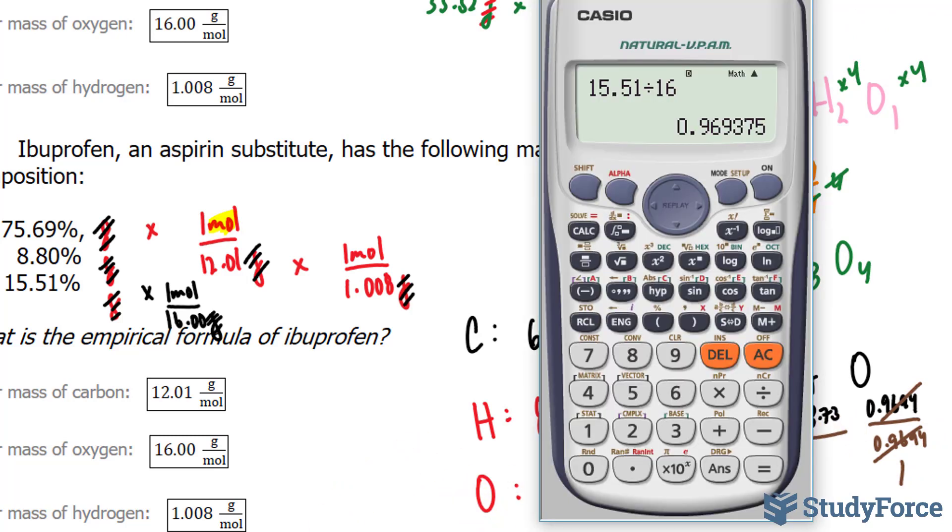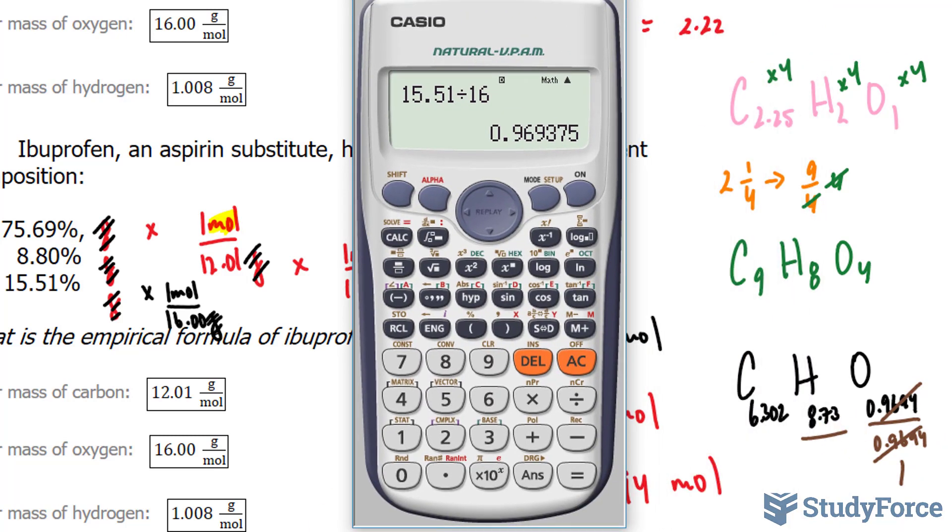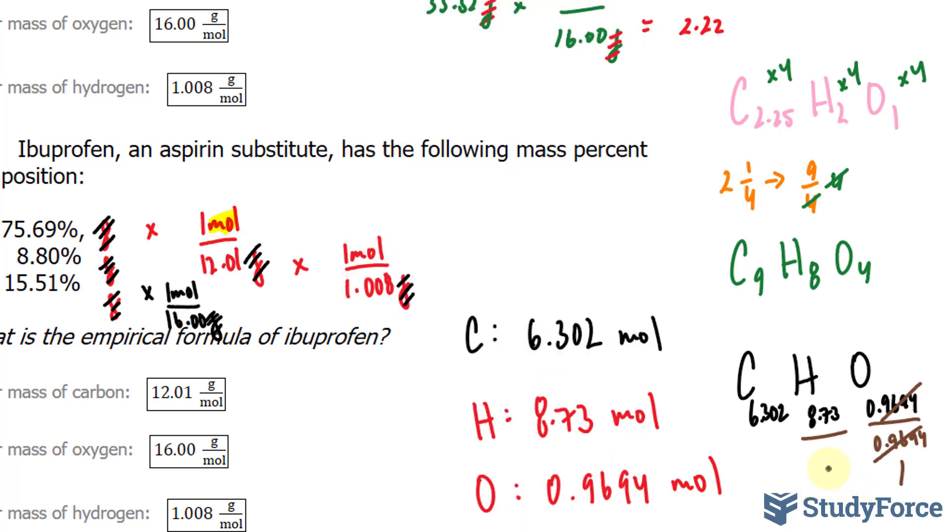Let's see what this will become. Using our calculator, 8.73 divided by the answer that we found, and we get 9, exactly 9. This becomes a 9, and let's see what happens to the C.